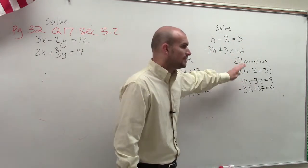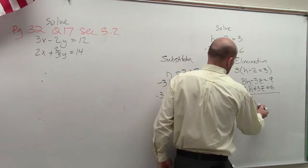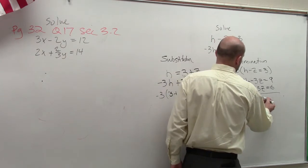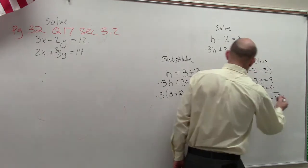So now, let's go ahead and add. So now what you guys will notice is you get 0h plus 0z equals 15, where 0 equals 15.